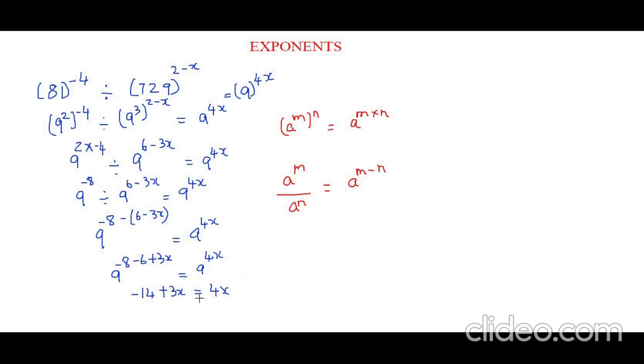So now let's take the 3x to the other side. So negative 14 will be equal to 4x minus 3x. So 4x minus 3x would be 1x, so we can write it as x equals minus 14.